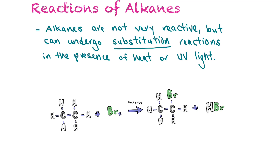Alkanes are not very reactive, but they can undergo substitution reactions if they're in the presence of heat or UV light. In this example, ethane and bromine are exposed to heat or UV, and the bromine substitutes for one of the hydrogen atoms. So we get bromoethane plus hydrogen bromide.